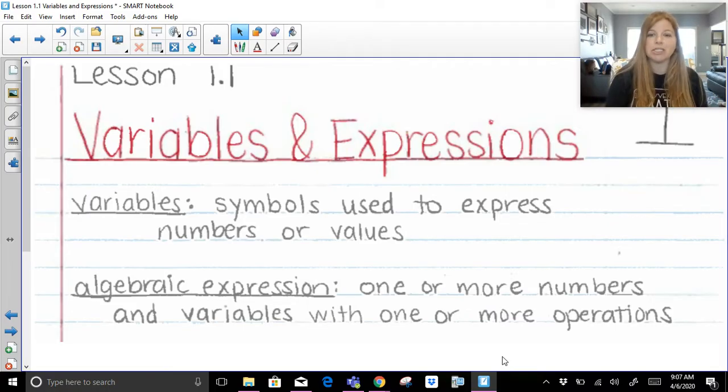An algebraic expression is one or more numbers and variables with one or more operations. So an algebraic expression would be if I had let's say 3x, so 3 times x plus 4. It's numbers, it's variables, it's one or more operations, 3 times x and then plus 4. So I have two operations going on there.